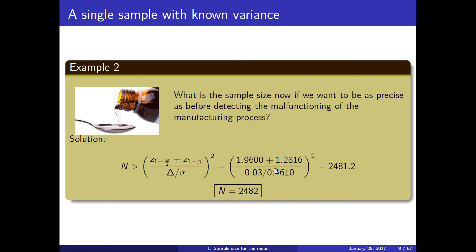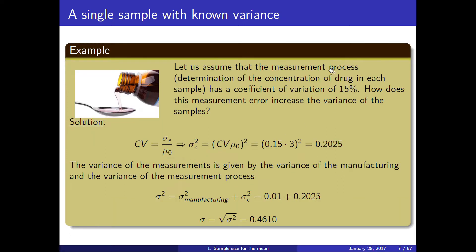We want to be extremely precise in a very noisy environment, so we will need almost 2500 measurements. We have to sacrifice either precision, or look for a machine with a smaller coefficient of variation — one that is more precise in its measurements.